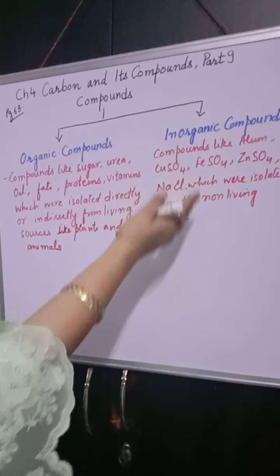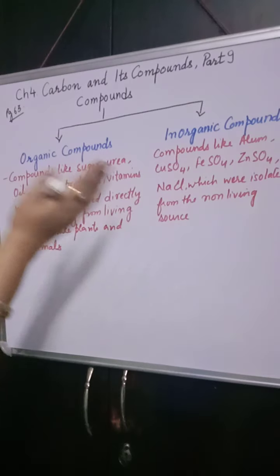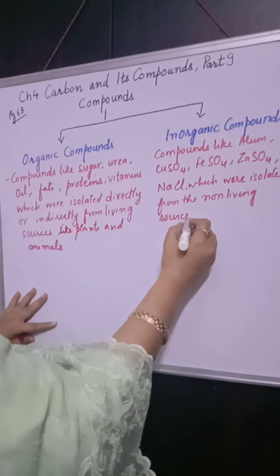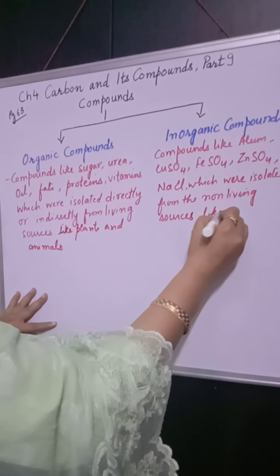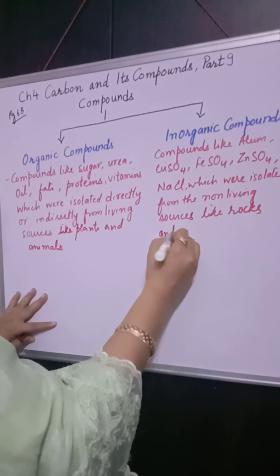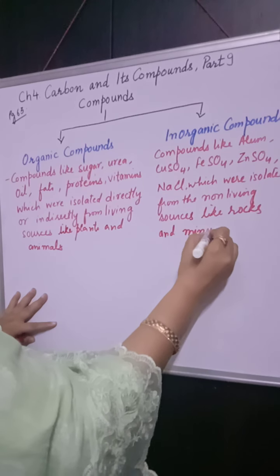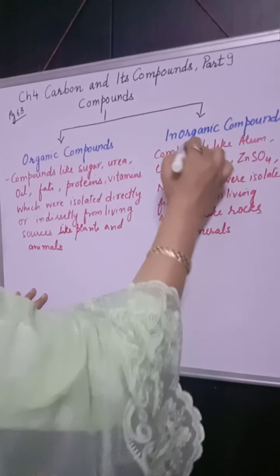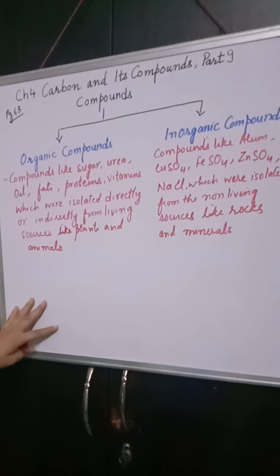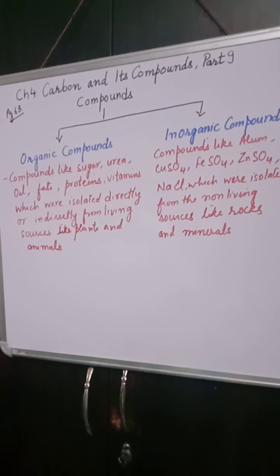Inorganic compounds are just the reverse. Compounds like alum, copper sulfate, zinc sulfate — compounds studied in the second chapter which were isolated from non-living sources like rocks and minerals — they are said to be inorganic compounds.